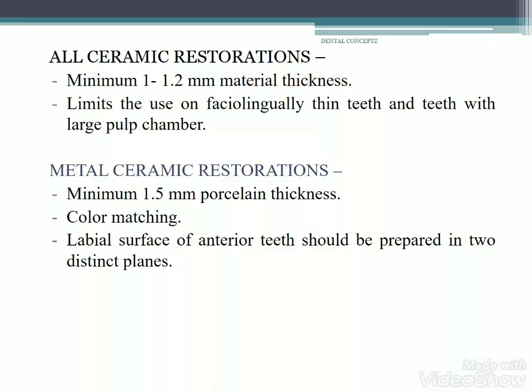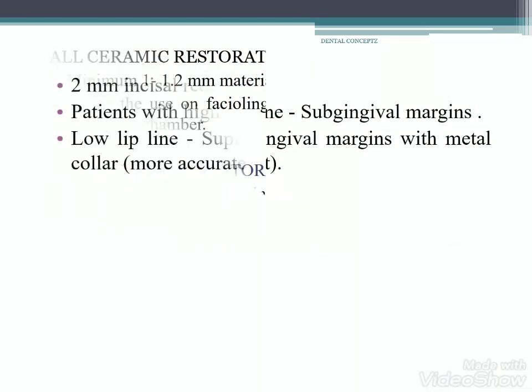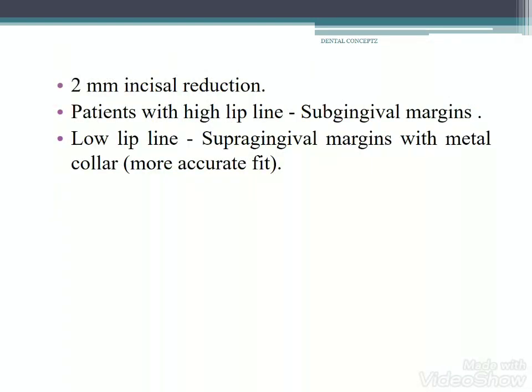For metal-ceramic restorations, a minimum 1.5 mm porcelain thickness is required and color matching is very important. The labial surface of anterior teeth should be prepared in two distinct planes, and 2 mm incisal reduction is required. In patients with a high lip-line, a subgingival margin should be given. In patients with a low lip-line, a supragingival margin with a metal collar can be given.